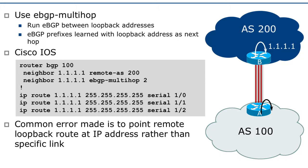The loopback interface on router A is not directly connected to the loopback interface on router B, and one of the requirements for eBGP is that the interfaces are directly connected. So how does router A find how to get to the loopback of router B? We have to put an entry in the global RIB pointing router A at the loopback of router B. In this example, I have set up three serial connections between AS100 and AS200, so I put a simple static route for router B's loopback into the configuration on router A, pointing to the three serial interfaces going to AS200.